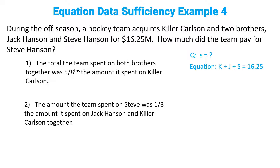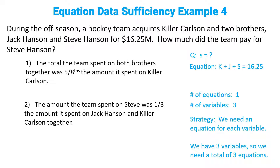Whenever you're being asked for a value and you're given equations, you want to count the number of equations you're given and the number of variables. In this case, we've been given one equation and we've got three variables: K, J, and S. The strategy is we need an equation for each variable, so we need a total of three equations. We've already been given one equation in the question, so we are looking for two more equations.